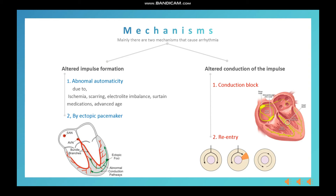The next type of altered conduction is re-entry. Re-entry happens when there is a transient blockage in a part of the conduction system. Think of this middle part in the diagram as the AV node. Transient blockage occurs at the AV node — transient means it can be blocked at one time and then open again.